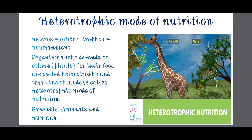This is the reverse of autotrophic mode. In this, organisms depend on other plants for their food. Organisms do not prepare their own food; they depend on other organisms. This mode is called heterotrophic mode of nutrition. The best example is we humans and animals - our bodies don't make food themselves, we depend on other organisms, whether animals or plants.